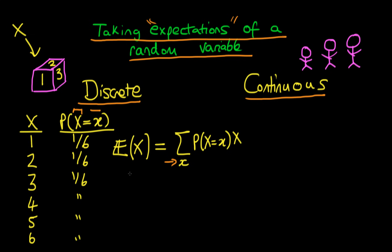What does this actually mean? The expectation is the value which we would get on average if we were to roll our die a large number of times — or in practice, an infinitely large number of times. So it's the average number we would expect to get on our die if we took the average over all of those throws.